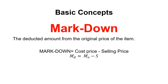Markdown means the deducted amount from the original price of the item. Markdown, denoted by M sub d, is equal to M sub o, which is the cost price, minus the selling price. So to get the markdown, we just subtract the cost price and the selling price. When we say markdown, it is the deducted amount from the original price. Usually when there is a markdown, there is a discount — a reduction in price.